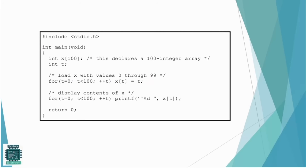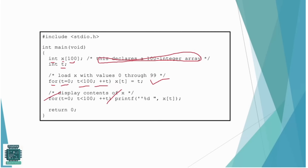Here is an example: 'int x[100]' — 'int' is the data type, 'x' is the variable name, and 100 is the size of the array, which places a hundred-integer array. By using a for loop — with initialization, condition, and incrementation — we first load values and then using a printf statement display the values of x. This is a programming example for the declaration of an array.